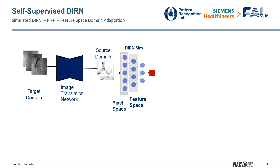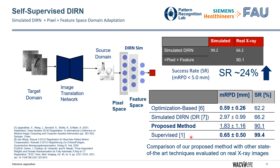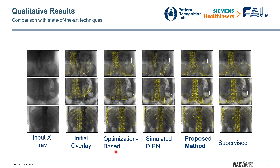Finally, we combine our Pixel Space and Feature Space Domain Adaptation techniques and achieve a 24% improvement over our baseline annotation-free scenario. We also closely match the supervised scenario and improve our registration error as well. The qualitative results clearly demonstrate that we closely match the supervised scenario while significantly outperforming the annotation-free scenarios.